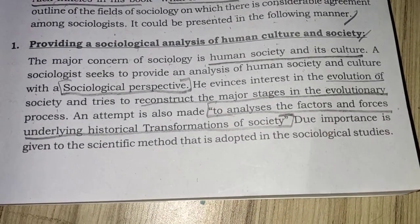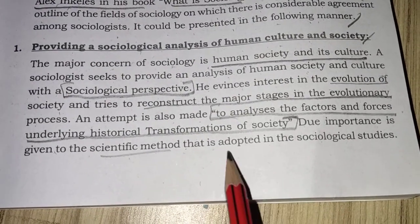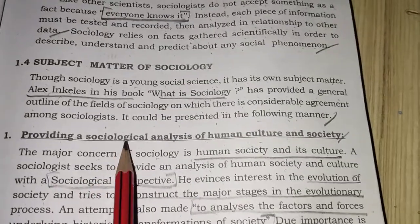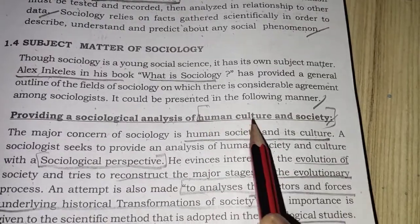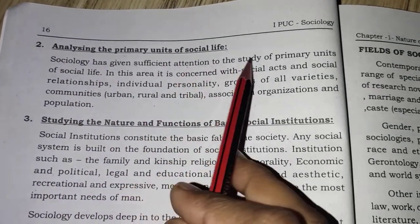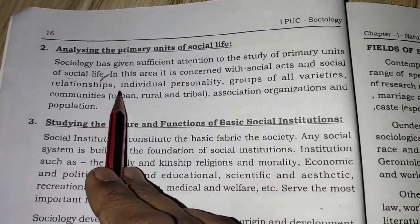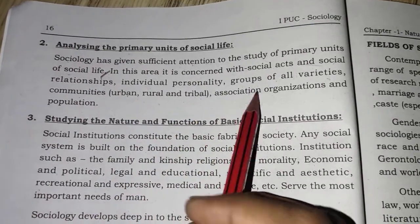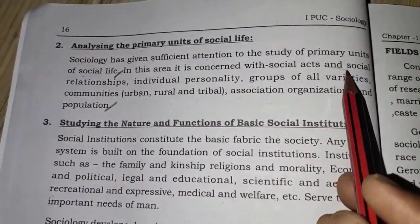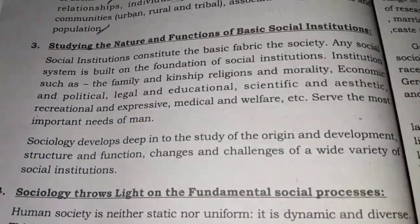Due importance is given to the scientific method adopted in sociological study. Next is analyzing the primary units of social life. Sociology gives sufficient attention to the study of primary units of social life. It is concerned with social facts, social relations, individual personality, groups of all varieties, communities — urban, rural, tribal — associations, organizations, and population. Sociology tries to give you the basic structure of society.